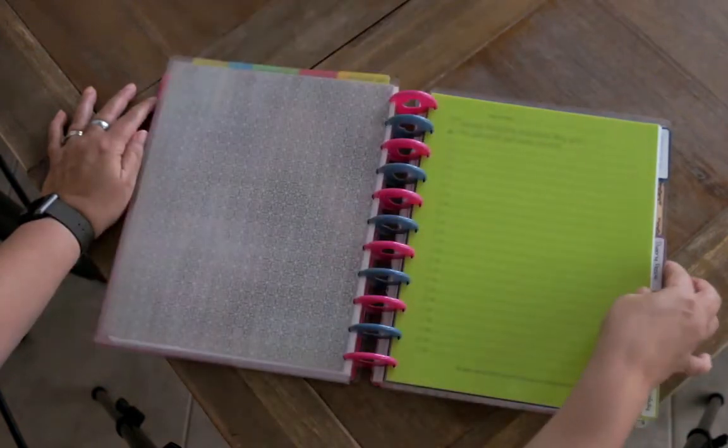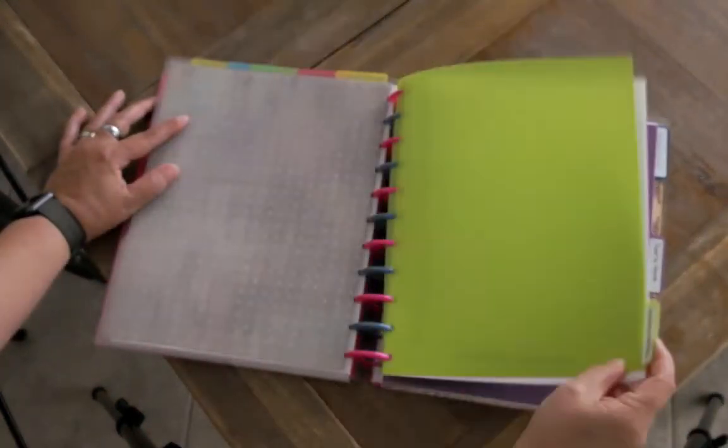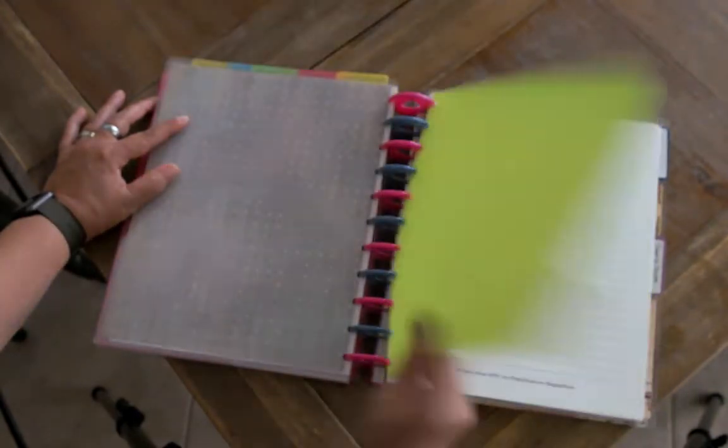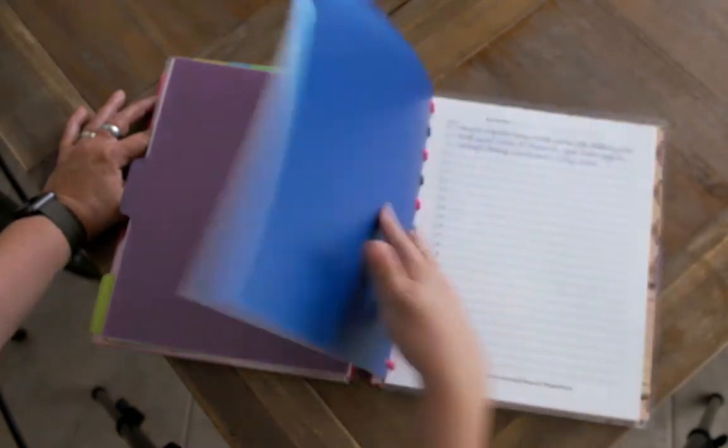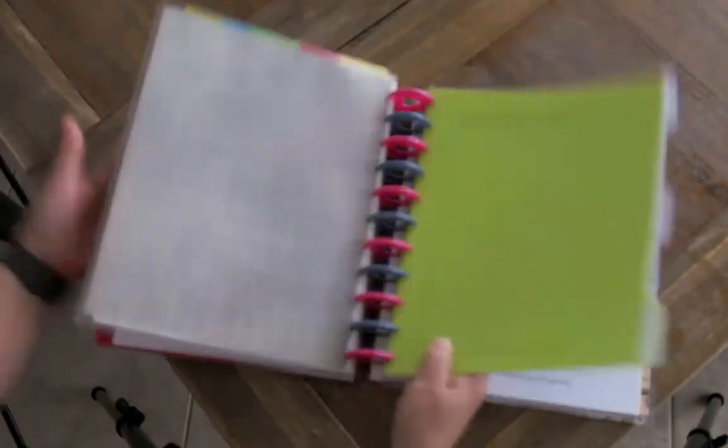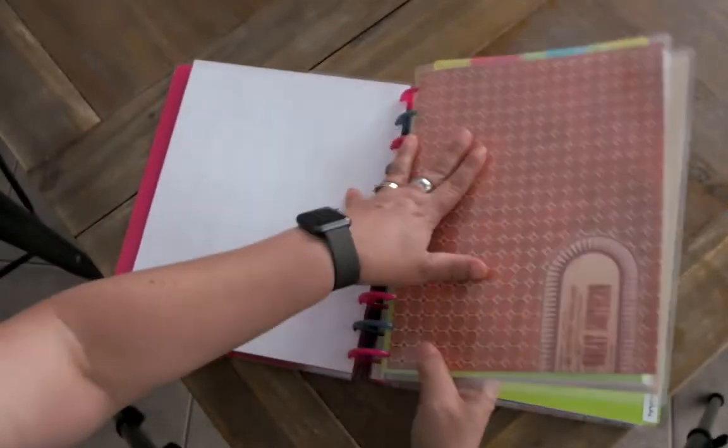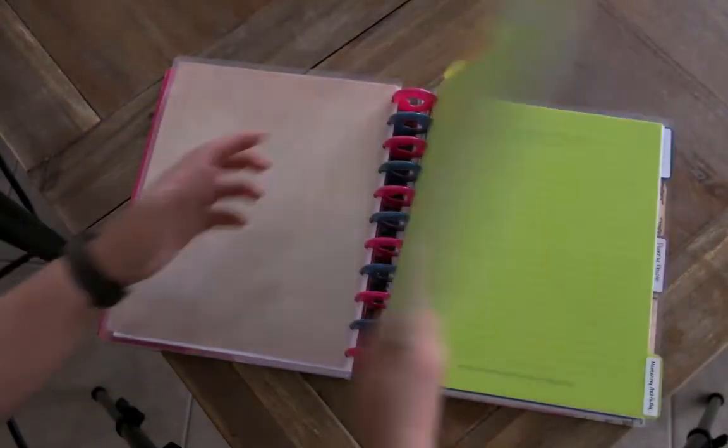All right, so my next section - and see these are the actual arc dividers. So for some of my stuff I actually use the arc dividers because I like the tabs being out on the side. So I have tabs that go this way and then in the front I have tabs that go this way, which is pretty exciting.